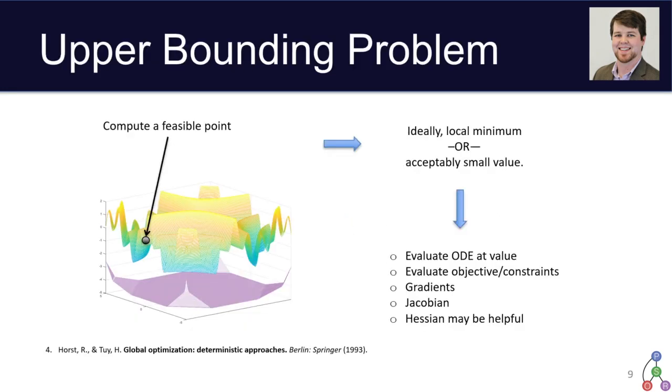Now the upper bounding problem is generally much simpler for global optimization. Essentially all we really need to do is compute a feasible point. So typically what's done is you solve a nonlinear program to local optimality. In some cases you'll set up acceptable tolerances and limits to limit this from going too far or to spend too much time on a single local NLP solve. And then to do this, we use the same usual toolbox of things you need for solving locally nonlinear programs. So that would be evaluating the objective, constraints, gradients, Jacobians, Hessians, possibly some vector products if you want to be efficient about storage and memory consumption.